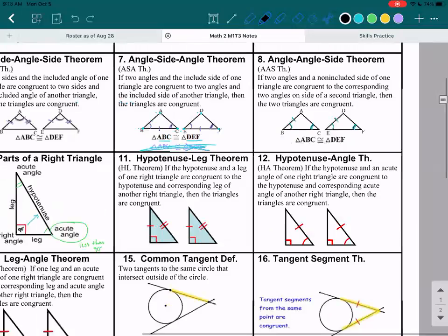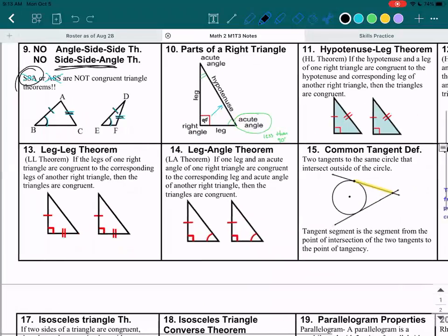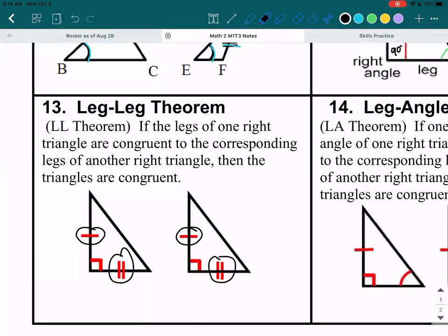There's also the leg leg theorem. So that means if both the legs are congruent, so those are congruent and those are congruent, then you will have leg leg theorem. The triangles are congruent.